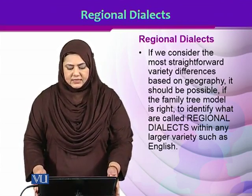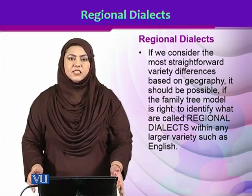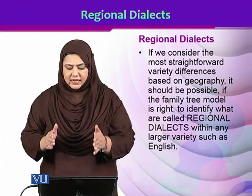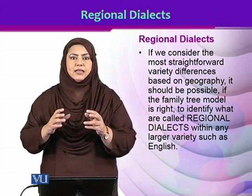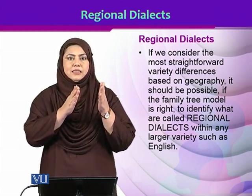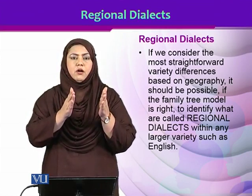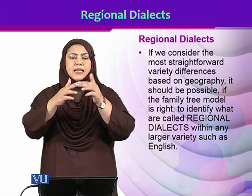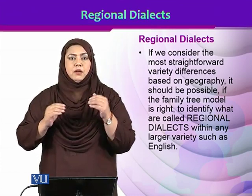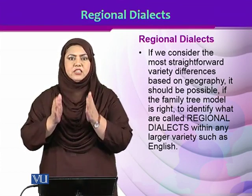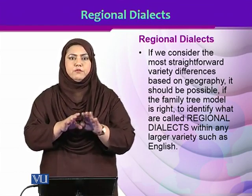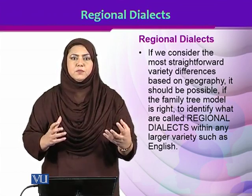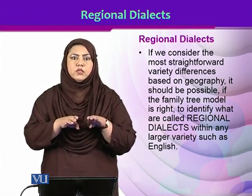Coming to the idea of regional dialects: if we consider the most straightforward variety differences based on geography, these can be called regional dialects. If the family tree model is right, it should be possible to identify clear-cut regional dialects — in region A, language A is used; region B, language B; region C, language C — all connected through a standard variety. But in reality, the boundaries are blurred. There would be a lot of grey area where both varieties mix up and where the identities of speakers of variety A and variety B would also be amalgamated.